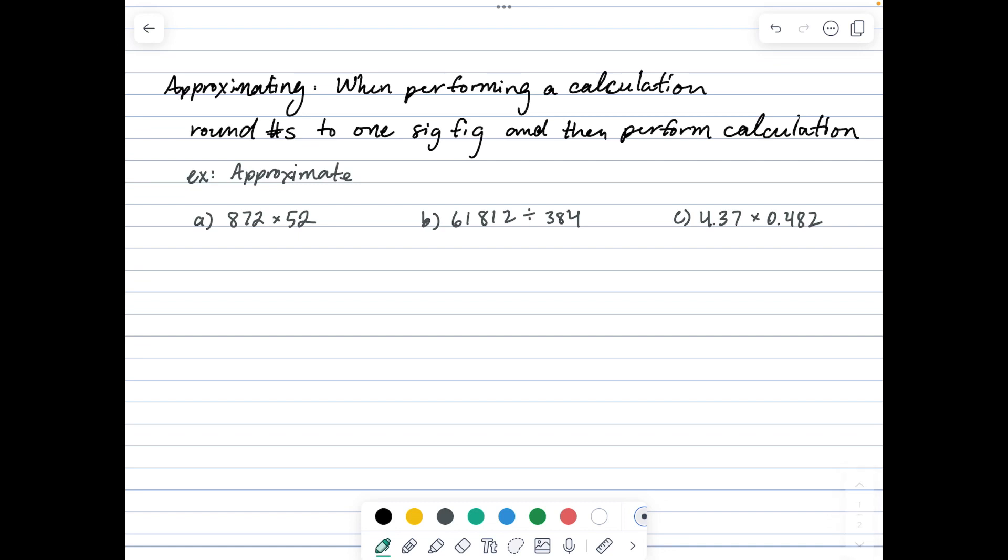Approximating is really useful in real life when dealing with math. When performing a calculation, we can approximate by rounding numbers to one significant figure and then perform the calculation. For example, approximating 872 times 52: we round 872 to 900 and 52 to 50. Now we've got 900 times 50 - 9 times 5 is 45 with three zeros, so approximately 45,000.